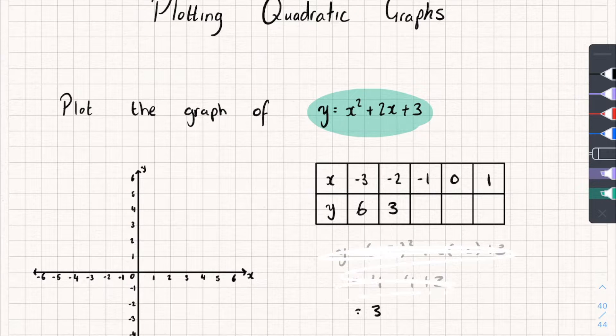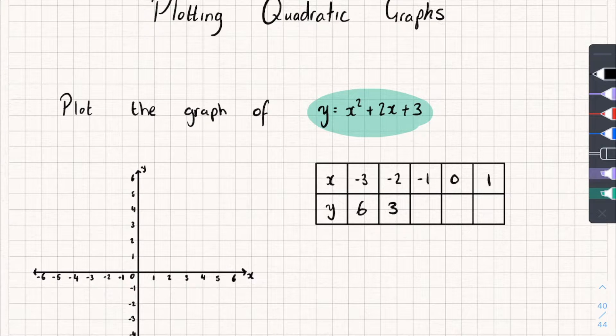Nice and easy. Now you can practice the rest of the table. It's usually easier with positive numbers. Negative numbers are notoriously difficult but still not too bad. So let me fill in the rest of the table and you can check your answers. When x is negative 1, y is 2. When x is 0, y is 3. And when x is 1, y is 6. So that's what your table should look like.